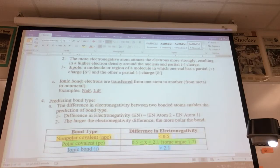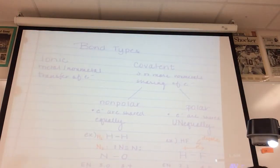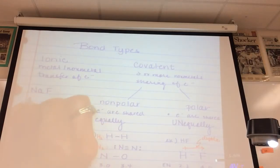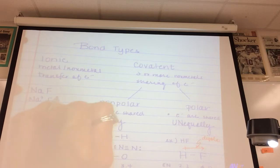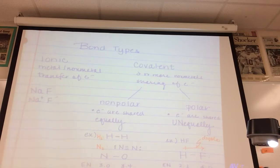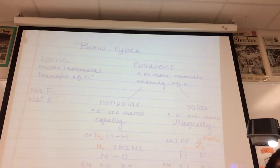In an ionic bond, electrons are transferred from one atom to another, generating ions. For example, sodium fluoride is a network where sodium loses an electron generating a sodium ion (Na+), and the fluorine atom gains an electron generating a fluoride ion (F−).